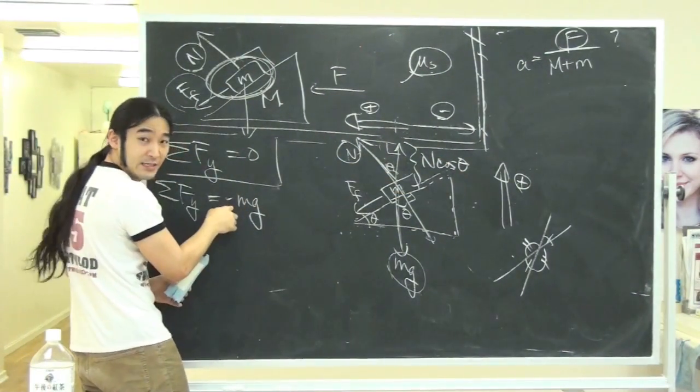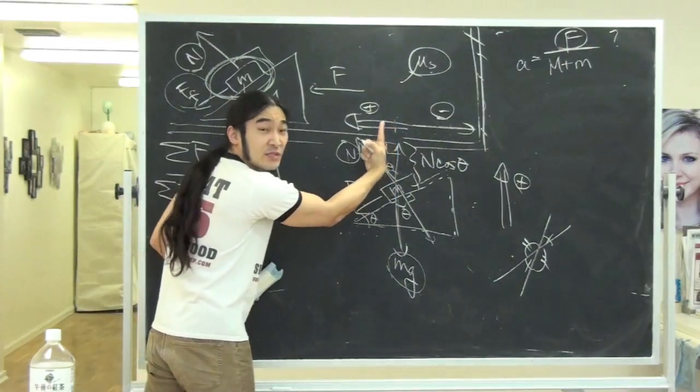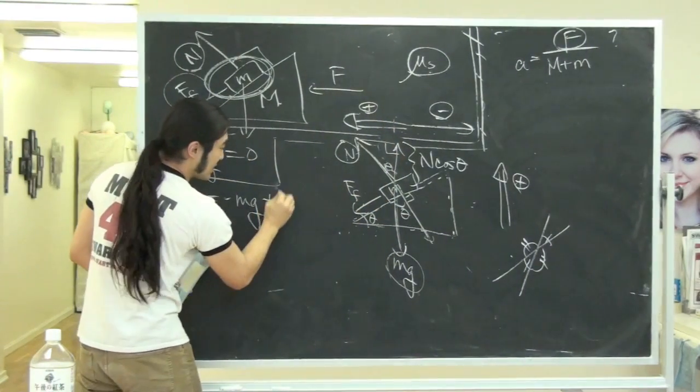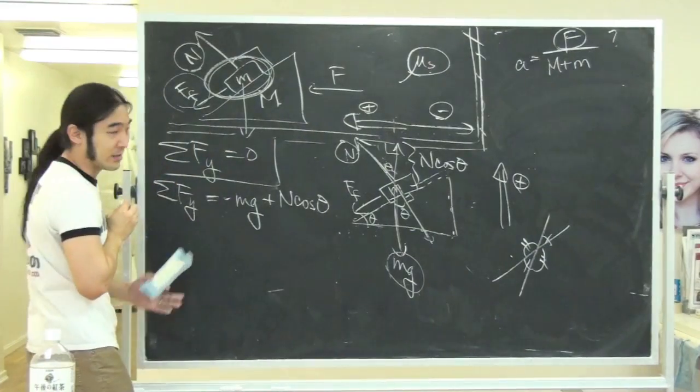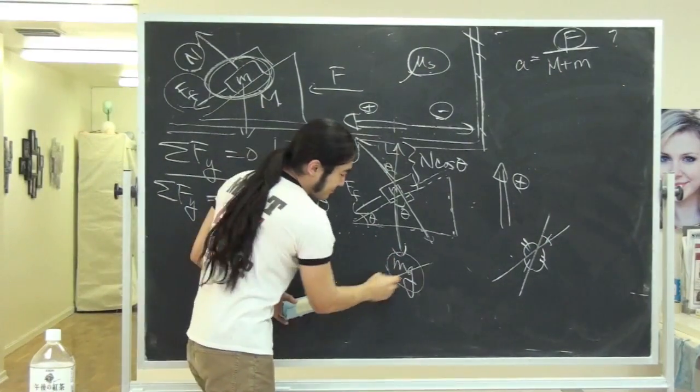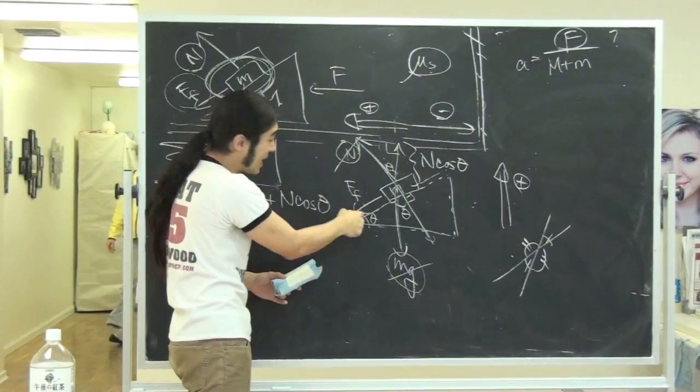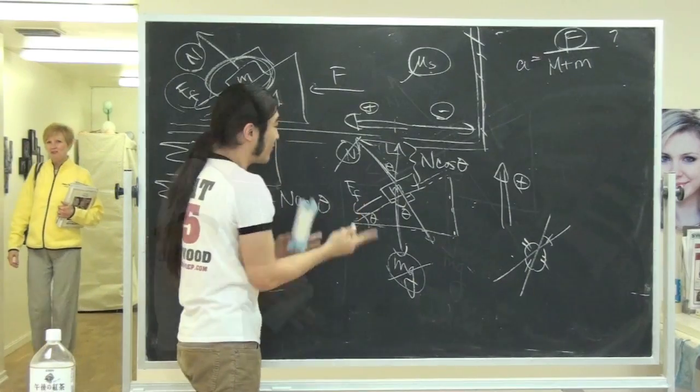So why don't we go ahead and put this in here. So I have minus mg. I have this guy pointing up, so he's definitely positive. So it's plus N cosine theta. So I've knocked out mg. I've knocked out the normal force. Now I've got to worry about friction.